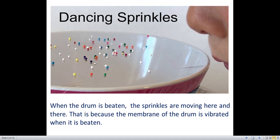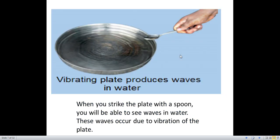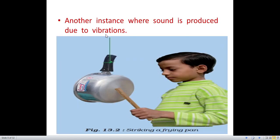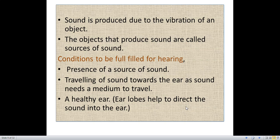Dancing sprinklers: when the drum is beaten, the sprinklers are moving here and there. That is because the membrane of the drum is vibrated when it is beaten. Another example: a vibrating plate produces waves in water. When you strike the plate with a spoon, you will be able to see waves in water. These waves occur due to vibration of the plate. Sound is also produced by striking a frying pan. Sound is produced due to the vibration of an object. The objects that produce sound are called sources of sound.